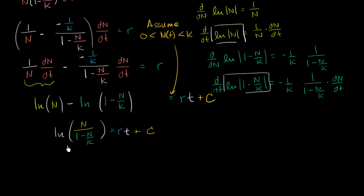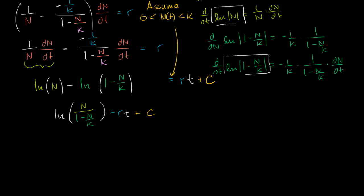This is the same as saying e to the (rt + c) equals n over (1 minus n/k), because the natural log of something equals the exponent you raise e to in order to get that value. We can also rewrite e to the (rt + c) as e to the rt times e to the c, and since e to the c is just another constant, we can write that as a constant times e to the rt.